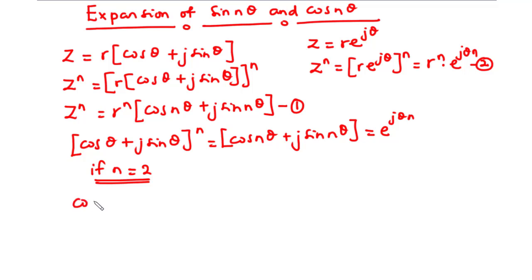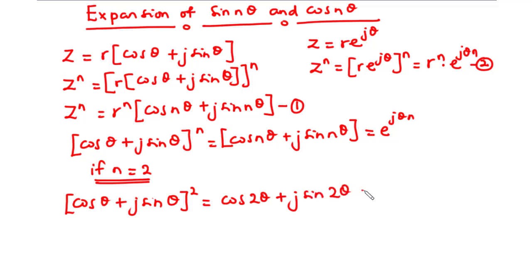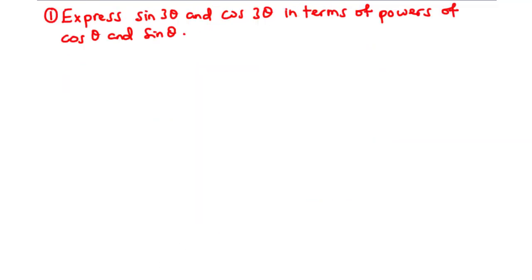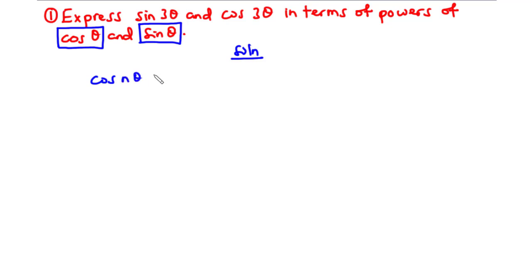For instance, if n = 2, then (cos θ + j sin θ)^2 = cos(2θ) + j sin(2θ), which is also equal to e^(2jθ). With this in mind, let's try some examples. Example one: express sin(3θ) and cos(3θ) in terms of powers of cos θ and sin θ.